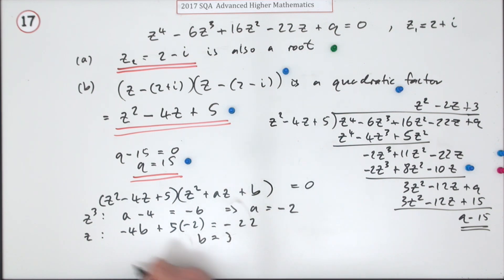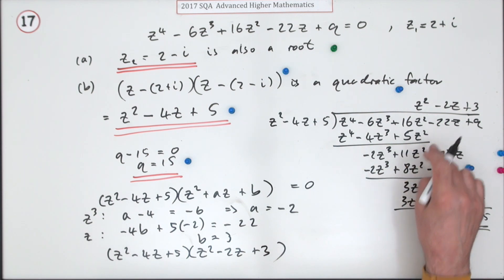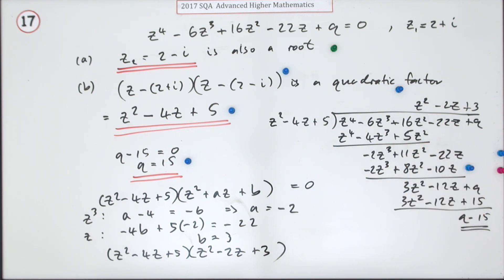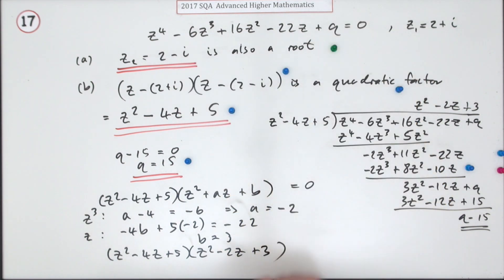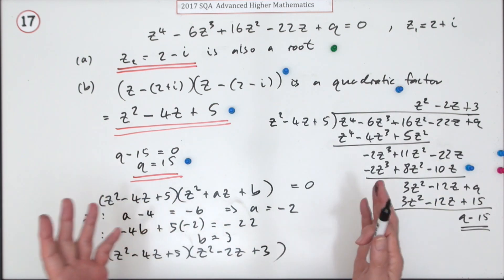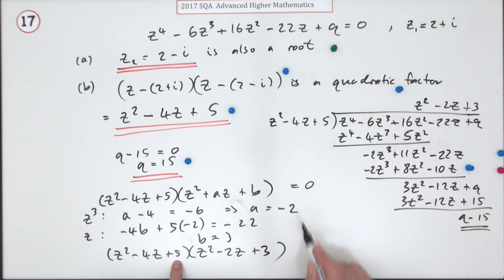So the polynomial factors as (z²−4z+5)(z²−2z+3). This takes less writing than algebraic division and is much faster when you know the constant at the end, since there's only one coefficient to find. If you want q, you know that 3×5=15, so q=15.